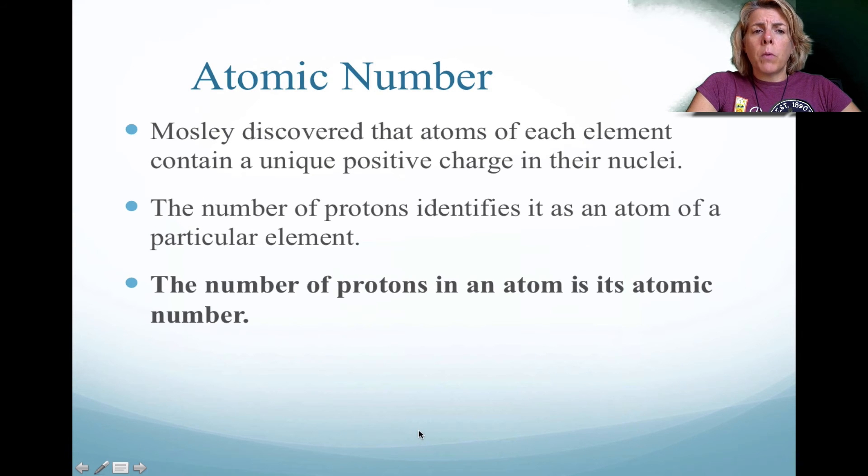So another person by the name of Mosley, he actually discovered that each atom of different elements has to have a unique positive charge. So because of this discovery, they determined that protons which are found in the nucleus have to be positively charged. So with this result, he determined that the number of protons in an atom has to determine the element or the atomic number.